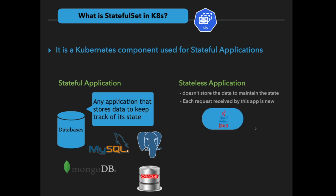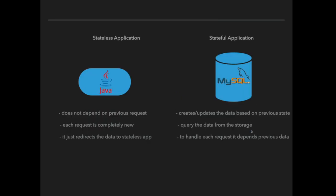On the other hand, a stateless application doesn't store data to maintain state. Each request received by a stateless application is completely new. Applications developed using programming languages like Java and Python come under the stateless application category. The stateless application doesn't depend on previous requests. The stateful application, however, has the capability to store data — it creates and updates data based on previous requests and queries data from storage.